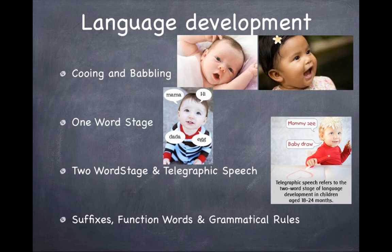The next stage is the one-word stage, occurring during the second year, where single words are used as whole sentences — for example, saying 'milk' to mean 'I want milk.' Then comes the two-word stage and telegraphic speech between 18 to 20 months, with about 50 words including verbs, nouns, and adjectives forming two-word sentences. By two years old, a child has around 270 words. The final stage involves suffixes, function words, and grammatical rules, where children gradually add modifiers and increase precision.